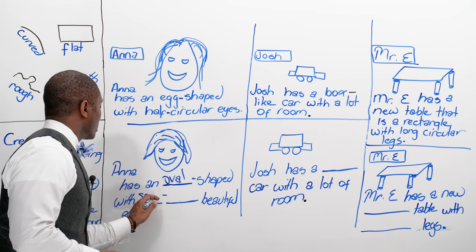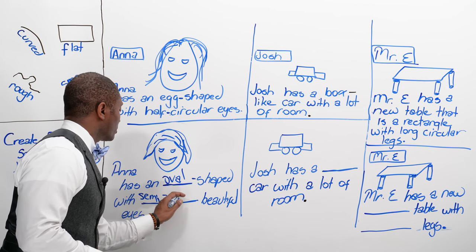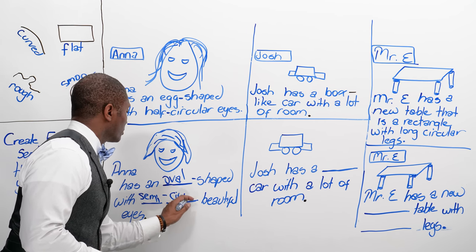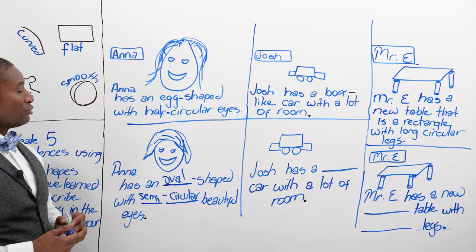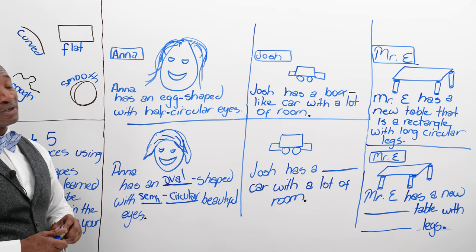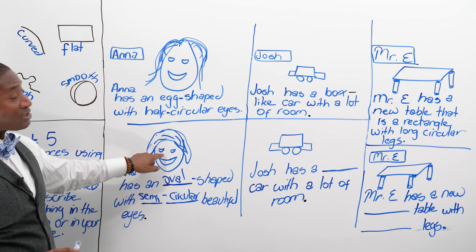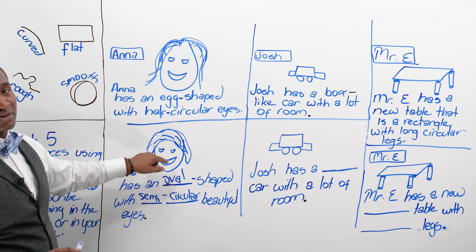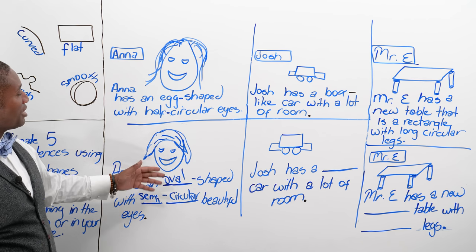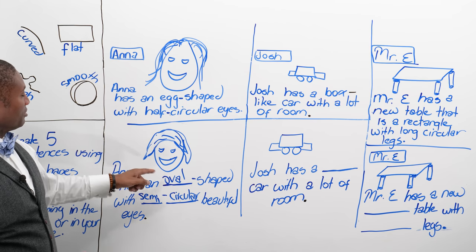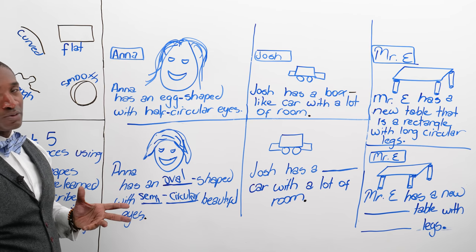But if we use our new vocabulary and say Anna has an oval-shaped head with semi-circular beautiful eyes — well, that's a different thing altogether. See how much more beautiful she is? Those eyes look like almonds — the hair, everything just comes together. We go from that to Anna's beautiful.